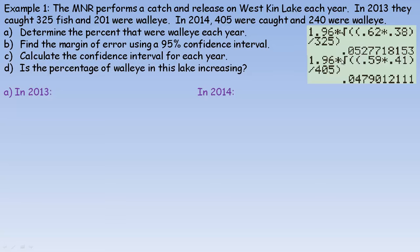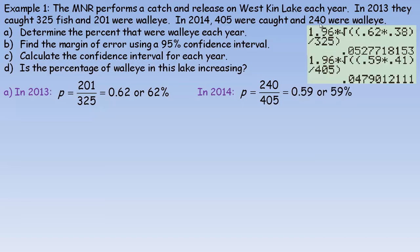In part A it says determine the percent that were walleye each year. So for 2013 we would divide 201 by the 325 fish that were caught, so 62% were walleye that year. And in 2014 we're dividing 240 by 405, which is 0.59 or 59%. So a little different percentage — it's not going to be exactly the same each year.